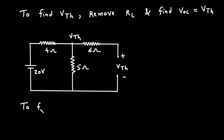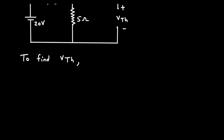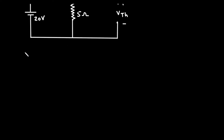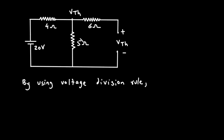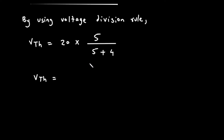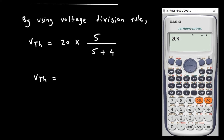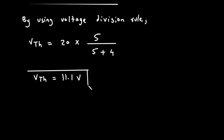To find the voltage across this 5 ohm, we will use the voltage division rule. By using the voltage division rule, VTH is equal to 20 multiplied by 5, divided by 5 plus 4. Solving this: 20 into 5 divided by 9, so VTH is equal to 11.1 volt.